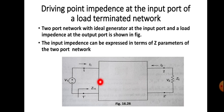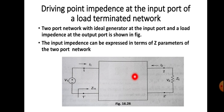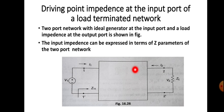We want to write the equation for input impedance — that is the V1/I1 ratio — when the output side is terminated by a load impedance Z_L. We want to represent it in terms of Z parameters, so first we have to write the equations for V1 and V2 in terms of Z parameters.